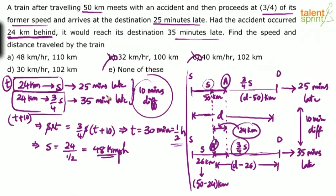So options B, C, and D get eliminated because their speeds are 32, 40, and 30 respectively. The answer should either be option A or option E. Even if you solve only half the problem, you have a 50-50 chance. But let us proceed to find the distance.